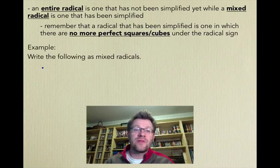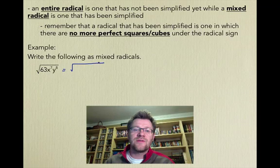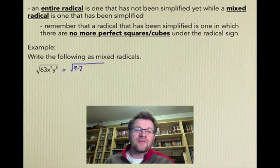Here's our example. It says write the following as mixed radicals. So we have the square root of 63x^7y^8. The way that we do this is we try and break each of these things up into things that are perfect squares. So 63 can be broken up to 9 times 7, because 9 is a perfect square.